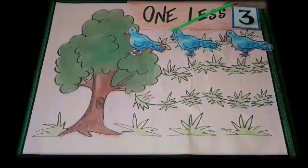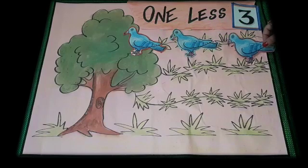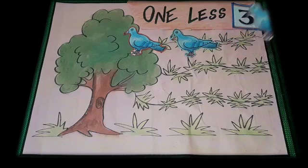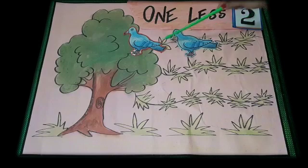Three peasants on a tree, eating in a queue. One flew to eat something, rest were left two. Three minus one is equal to two.